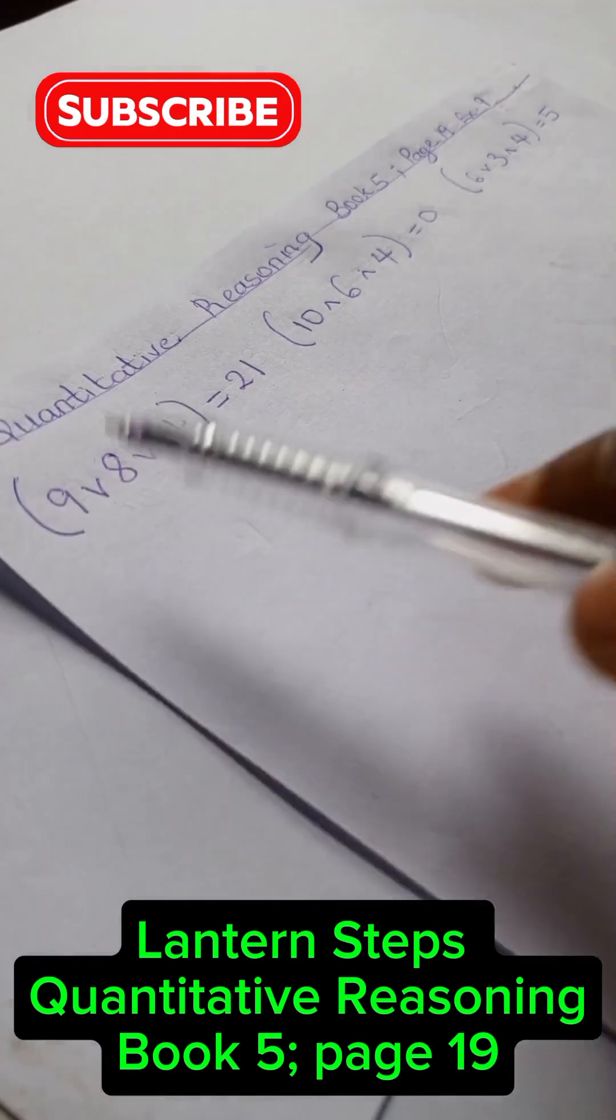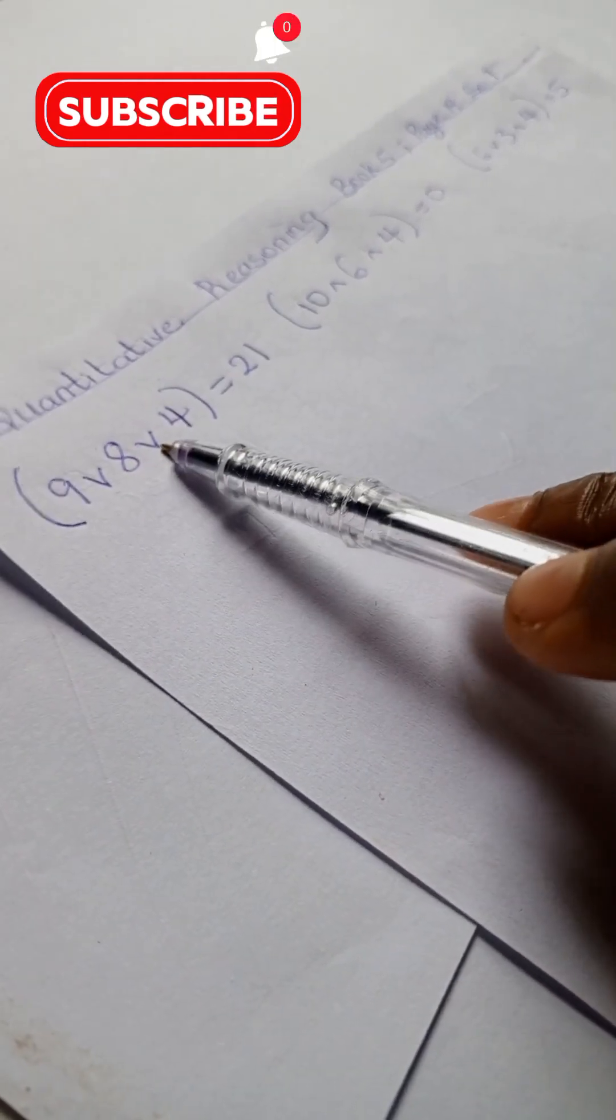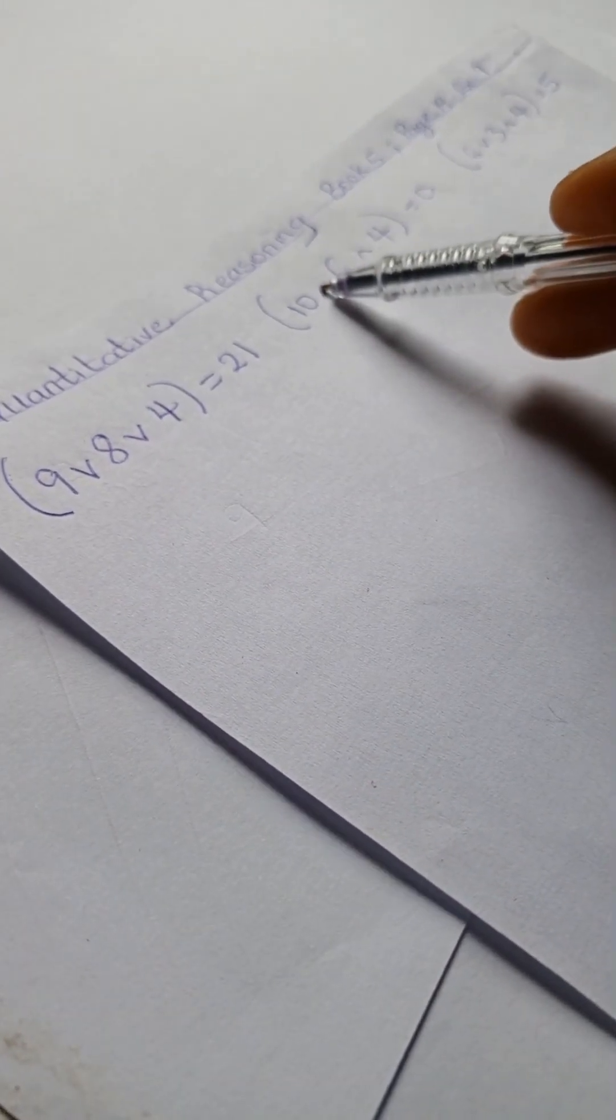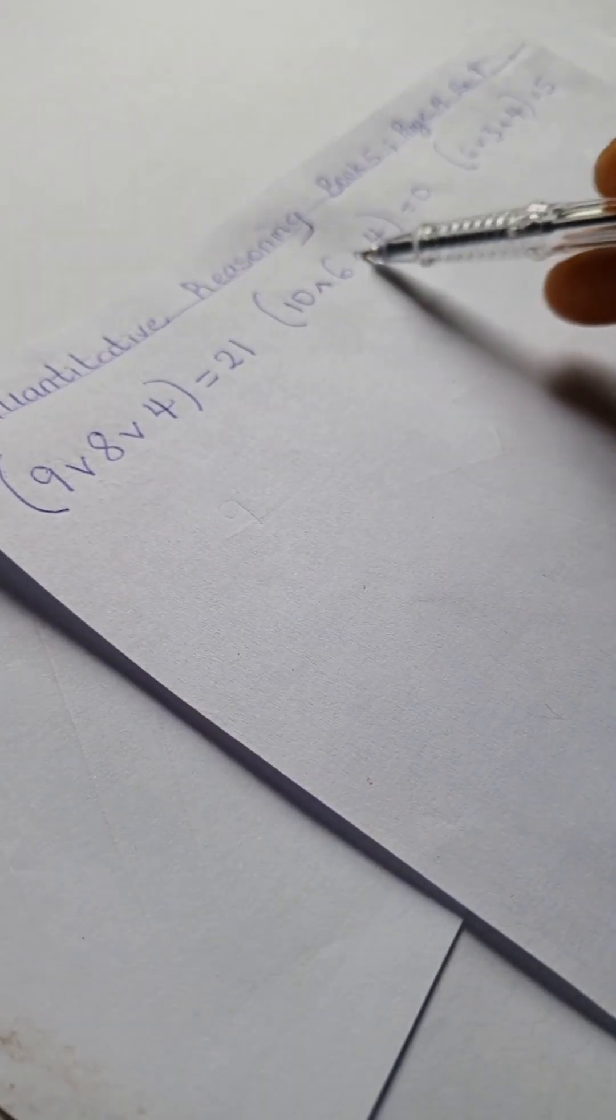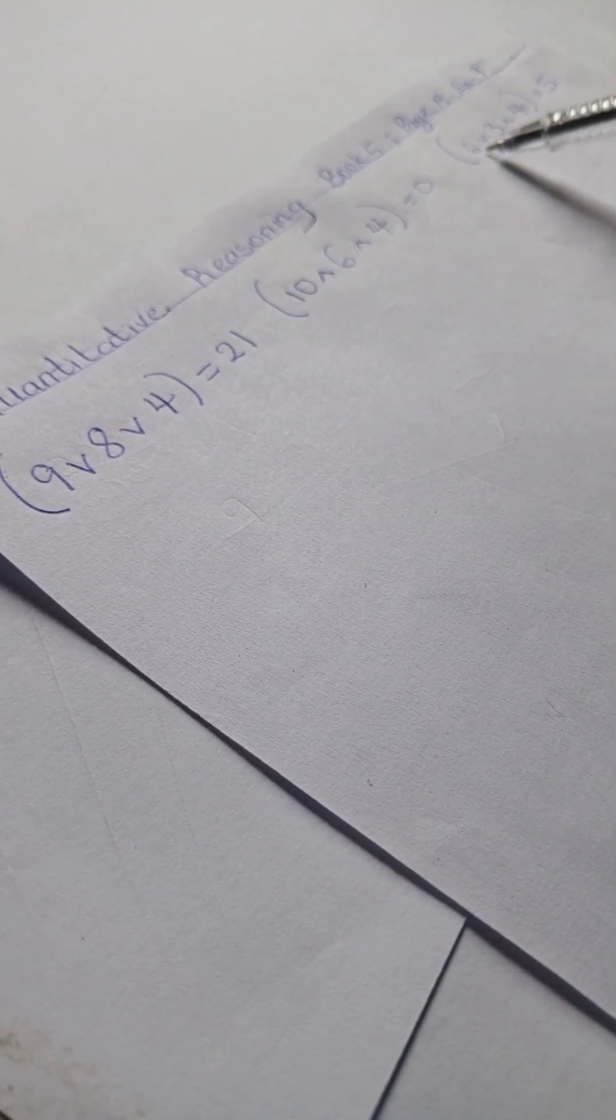We have problem 9, which looks like 9 V 8 V 4 equals 21. And here we have problem 10, which looks like something facing down: 10, 6, 4 equals zero.